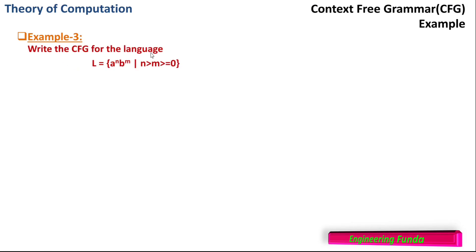First let us see the problem definition: write a context-free grammar for the language L = {a^n b^m | n > m ≥ 0}. So the minimum value of m is 0, but the minimum value of n is m+1. So whatever my m value is — if m is 10, then n can have a value greater than or equal to 11. What we have to do is split this condition into two parts and observe if we can find some pattern.